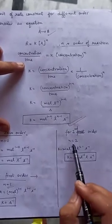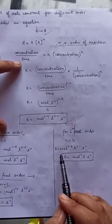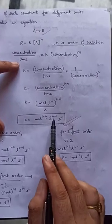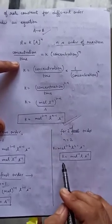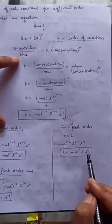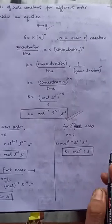Now for second order, N will be equal to 2, which means 1 minus 2 and liter 2 minus 1, second inverse. So it will be equal to K mole inverse, liter, second inverse.